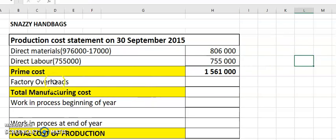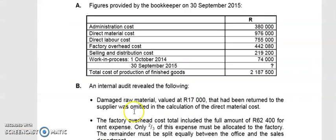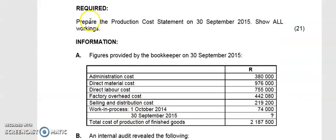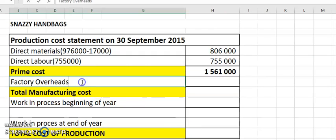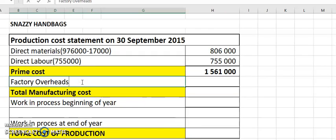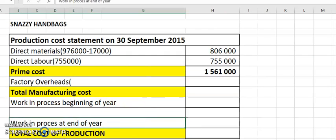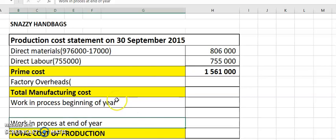Moving on to factory overheads. In this question they only ask for the production cost statement, not a separate factory overheads note, so we do our calculations in brackets. Factory overheads cost is 442,080 — put that in brackets and we'll adjust from there.